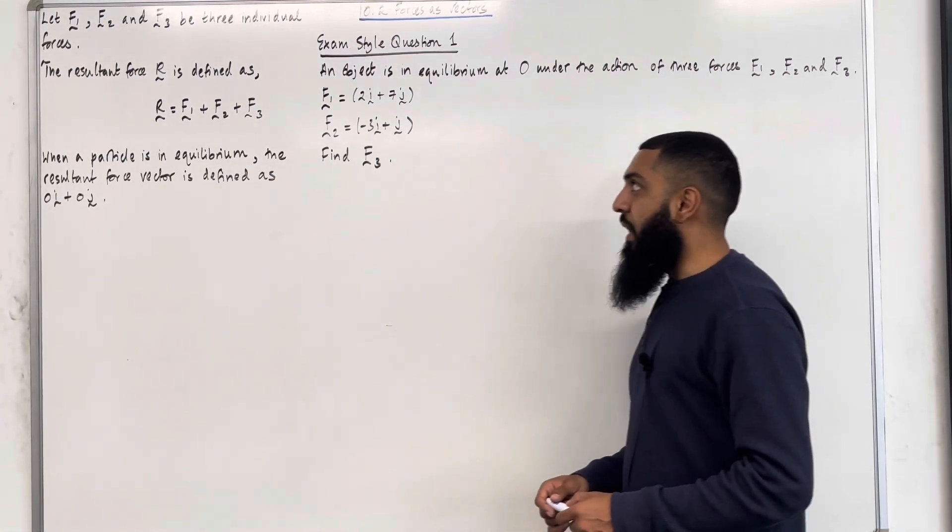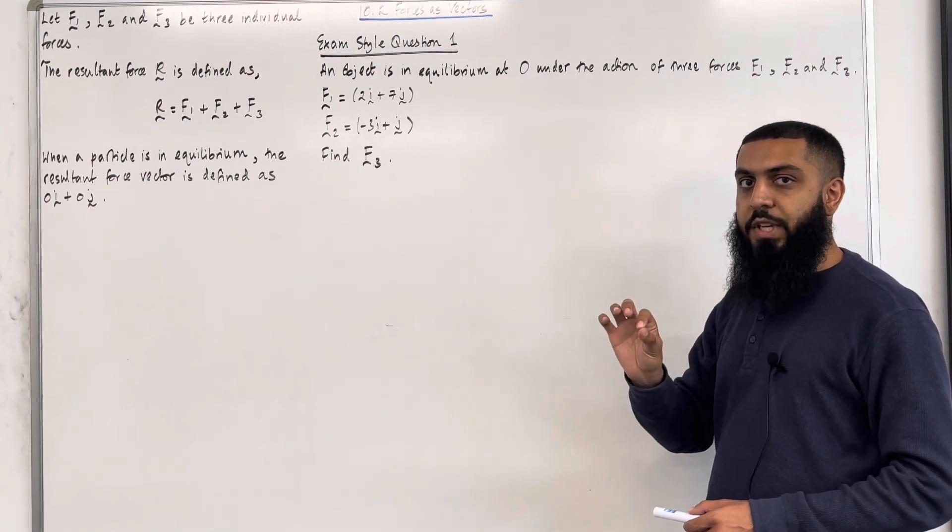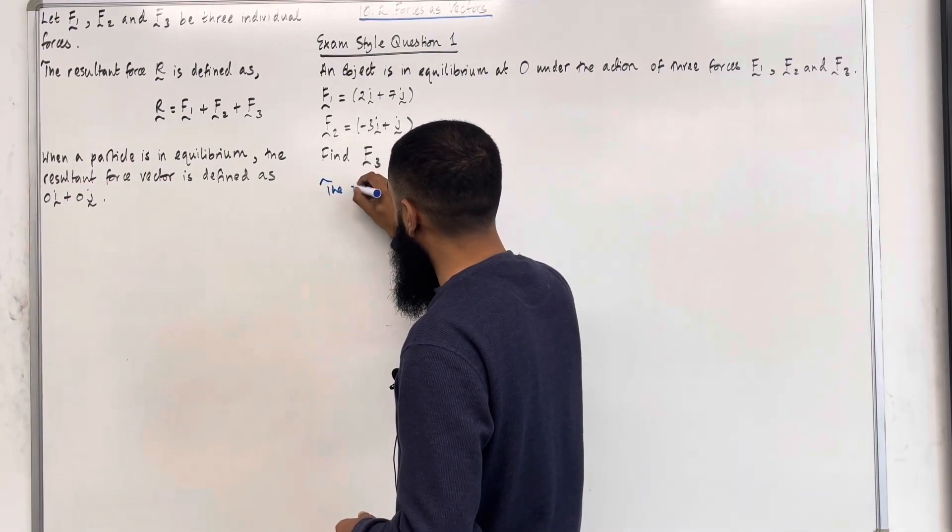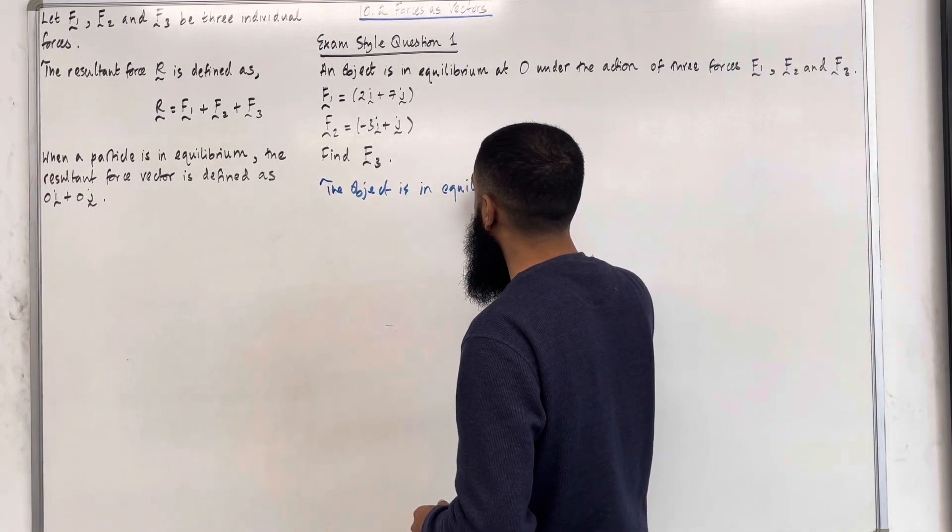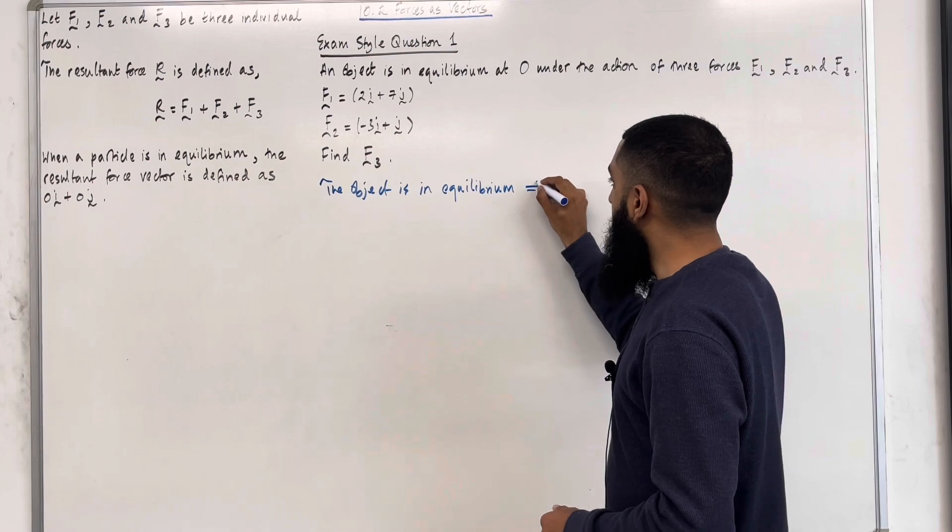Ladies and gents, we are first told that the object is in equilibrium at all. So I can start by writing the object is in equilibrium. This implies that, by definition, the resulting force R has to equal 0i plus 0j.